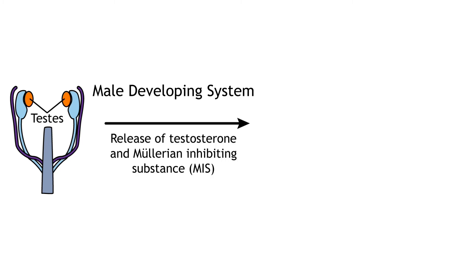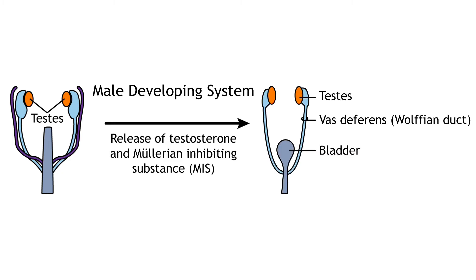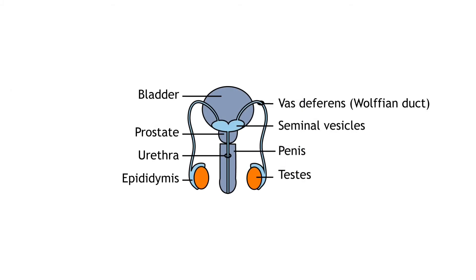The testes then begin secreting both testosterone and a hormone called the Müllerian-inhibiting substance. Testosterone causes Wolffian ducts to develop into the vas deferens, seminal vesicles, and epididymis. Müllerian-inhibiting substance causes the Müllerian ducts to degenerate. The presence of testosterone also results in the development of the prostate gland and penis.